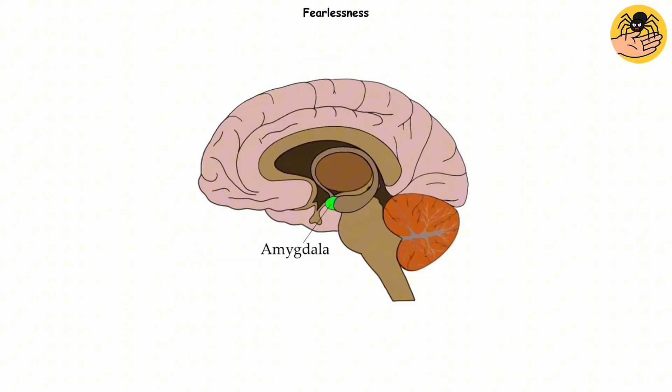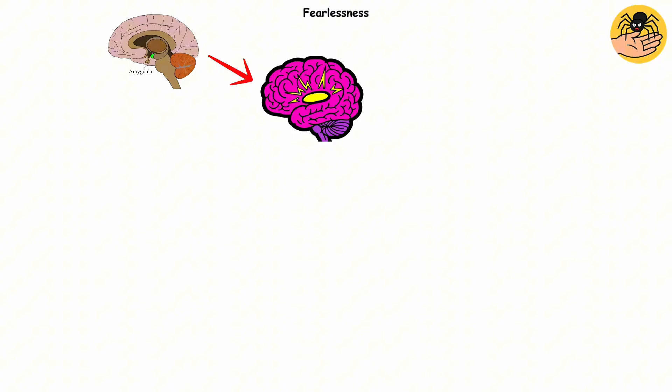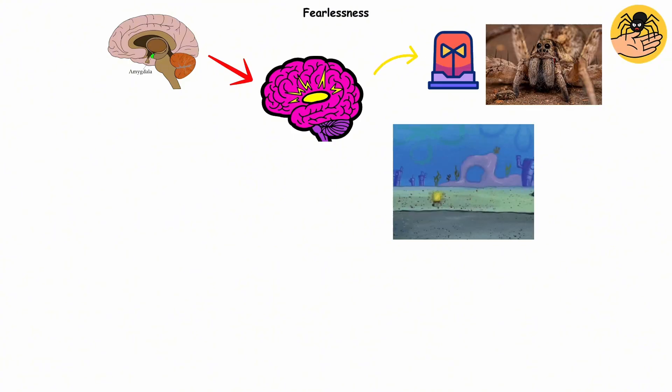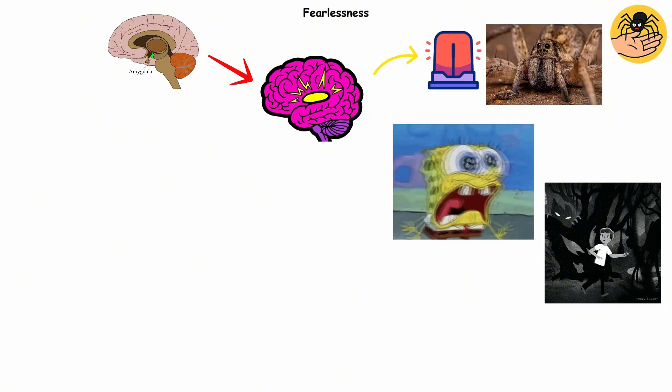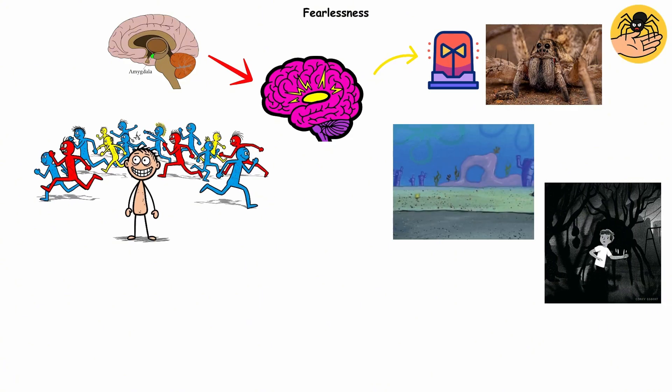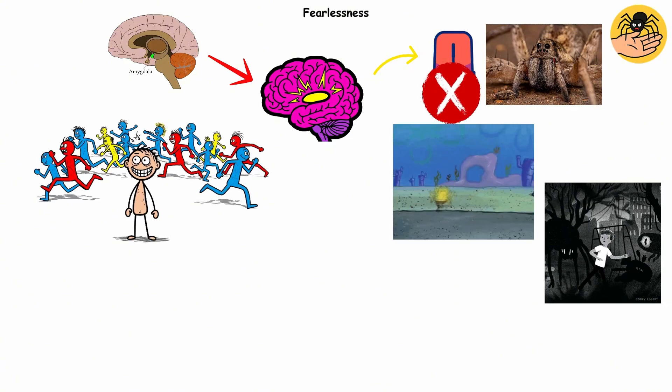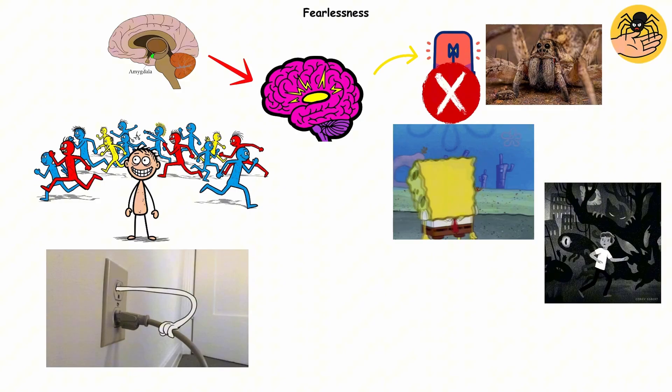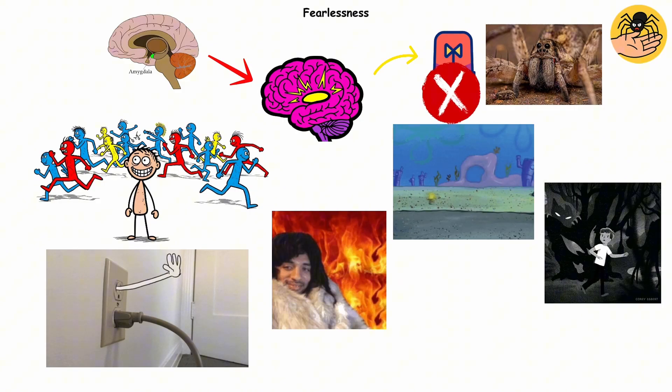This happens when the amygdala, the brain's fear control center, is damaged or underdeveloped. Normally, it's your internal alarm system, the one that yells 'run' when you see a spider or hear footsteps in the dark. But in people with this condition, that alarm is permanently muted. It's like having your emotional smoke detector unplugged. Peaceful, but maybe not ideal in a real fire.